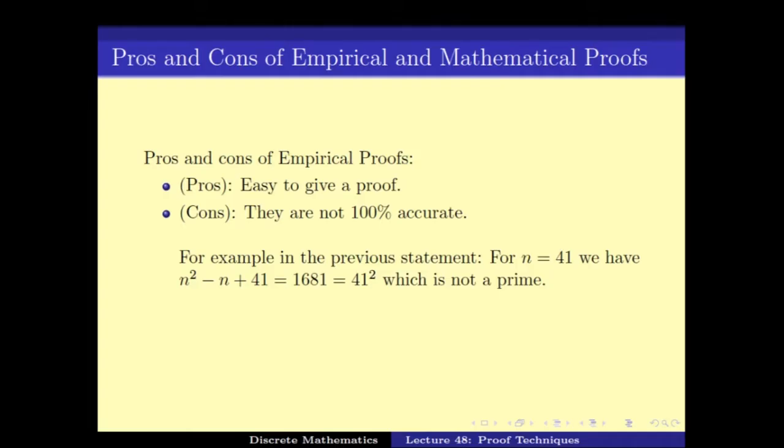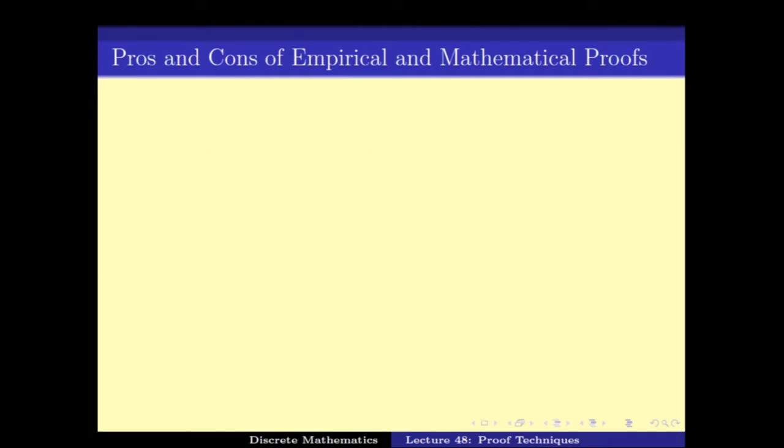And if we have done it experimentally, we might have missed this n equals to 41. So, this statement is false but empirically we might end up saying it is true.